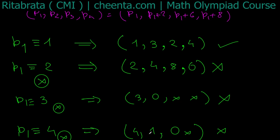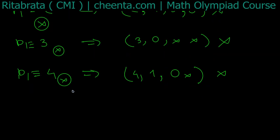So if I divide p1 by 5, the possible remainder we can get is 0, 1, 2, 3, 4. But we already got that 0, 2, 3, 4 are not possible. So 1 is the only possible solution. So p1 congruent to 1 mod 5 is the only solution.